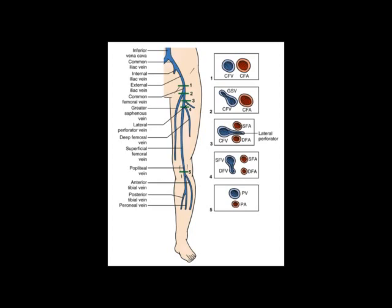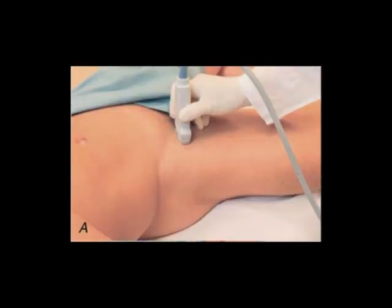The superficial and deep femoral veins sit medial to their corresponding superficial and deep femoral arteries. Finally, at point number five in the popliteal fossa, we have the popliteal vein sitting superficial to the popliteal artery. If you ever need to remember which is which, just remind yourself: 'pop on top' — the popliteal vein lies superficial and therefore on top of the popliteal artery.